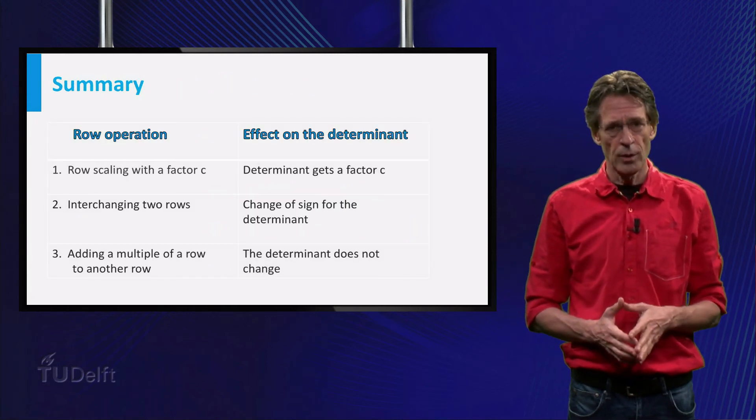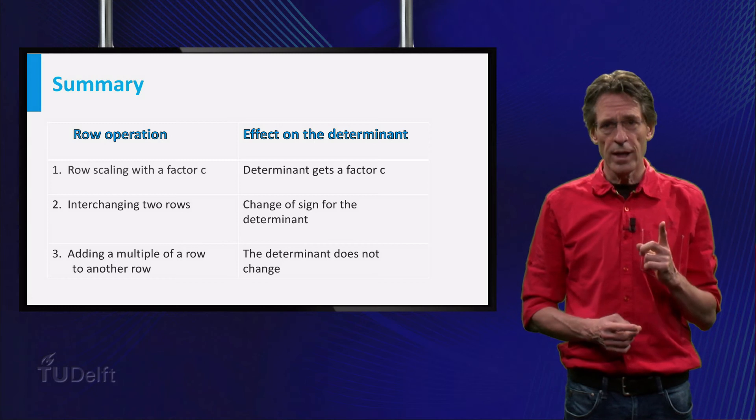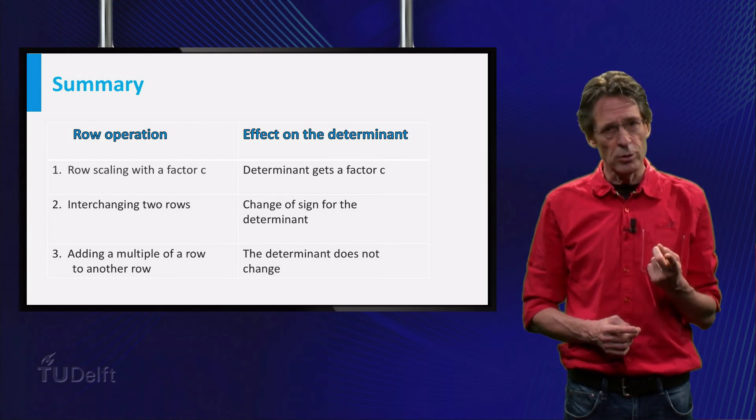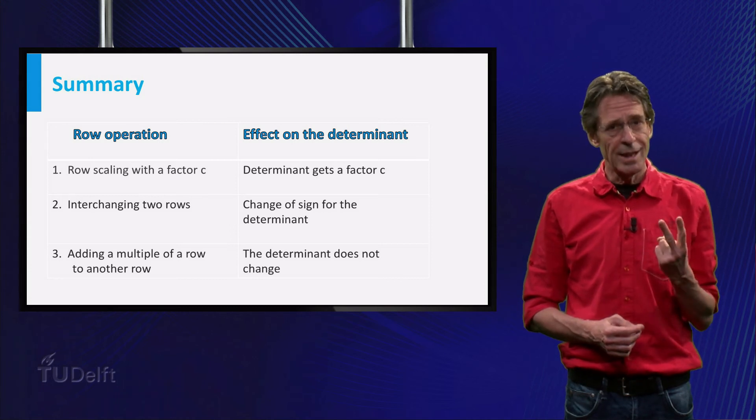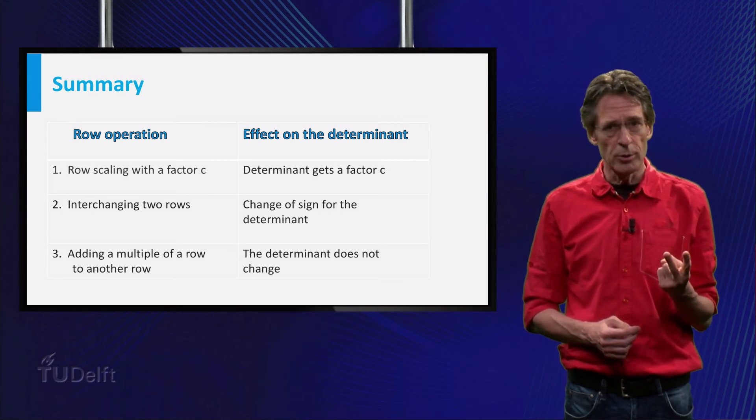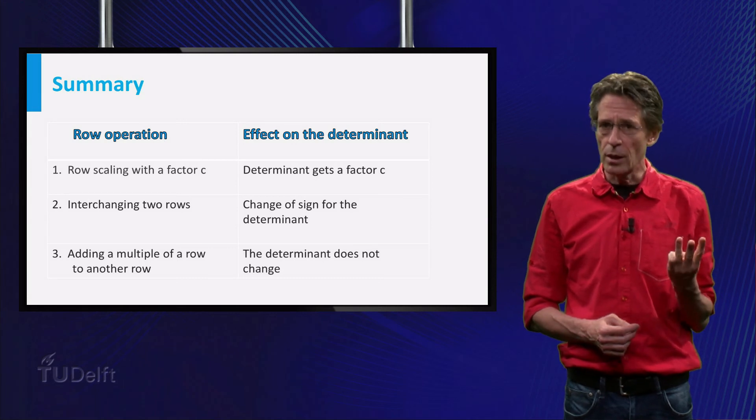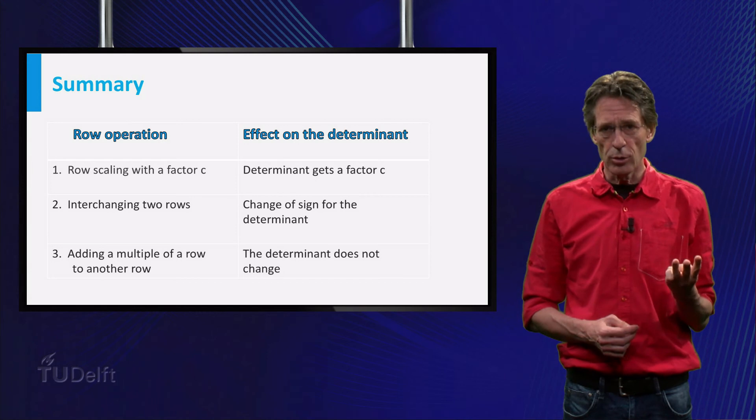So what have we found? First, row scaling with a factor c gives a factor c to the determinant. Second, swapping two rows leads to a change of sign of the determinant. And third and last, adding a multiple of one row to another row leaves the determinant invariant.